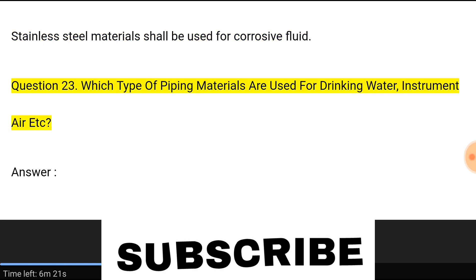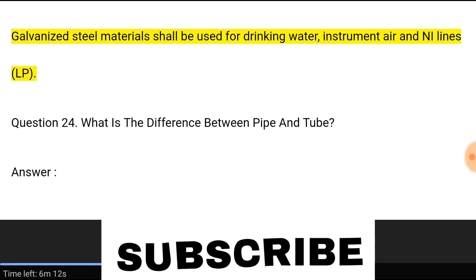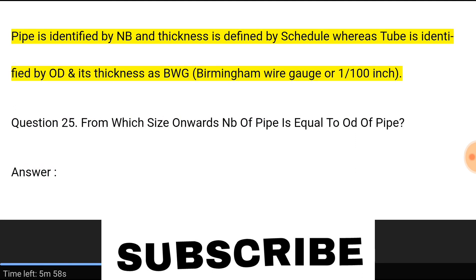Question 23: Which type of piping materials are used for drinking water, instrument air, etc.? Answer: Galvanized steel materials shall be used for drinking water, instrument air, and LP lines. Question 24: What is the difference between pipe and tube? Answer: Pipe is identified by NB and thickness is defined by schedule, whereas tube is identified by OD and its thickness is BWG (Birmingham Wire Gauge) or 1/100th inch.